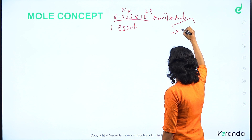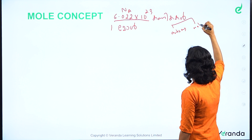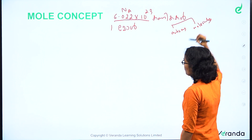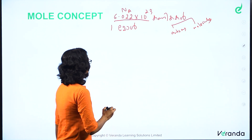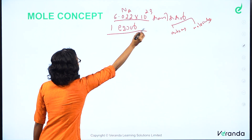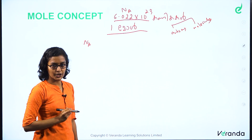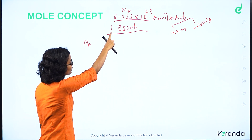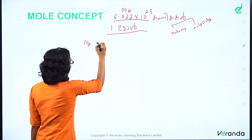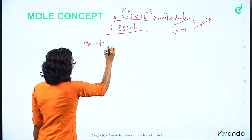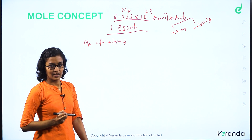What are the moles made of? Atoms and molecules. Avogadro's number of atoms or molecules constitutes one mole. Avogadro's number is 6.022 × 10²³. So, Avogadro's number of atoms — what is one mole?